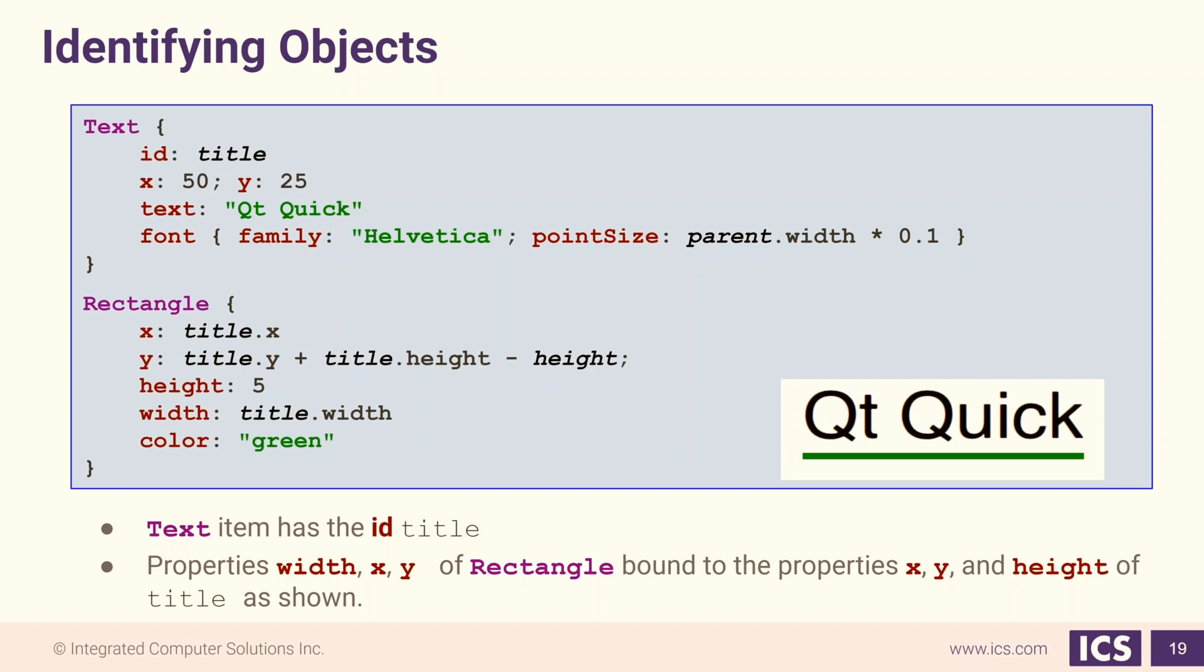Once we set an ID for our object, our text object, the rectangle can now use its ID to access its properties. Then we can bind the rectangle's x, y, and width to the title's x, y, and width.